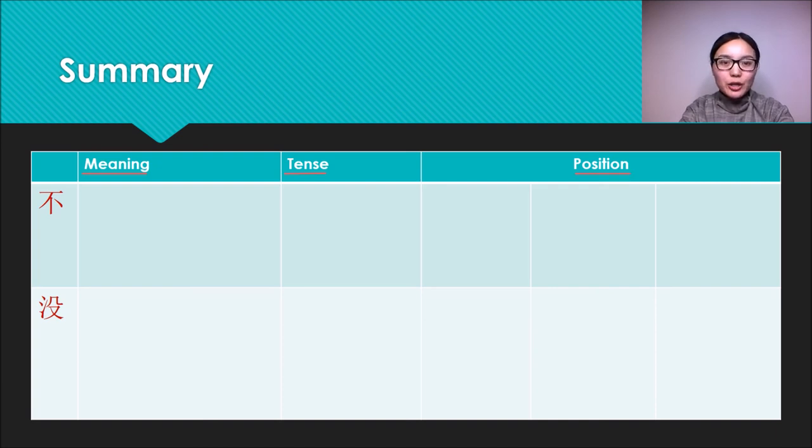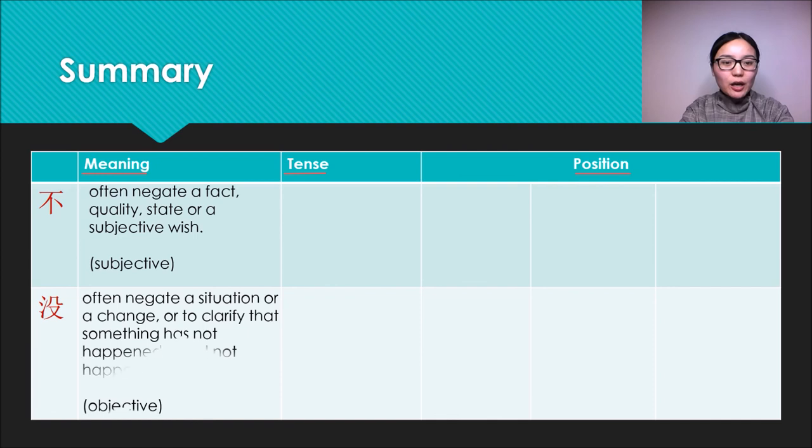In the first part, we should know that 不 often negates a fact, quality, state, or a subjective wish. It stresses subjective. However, 没 often negates a situation or a change, or to clarify that something hasn't happened or didn't happen. So it stresses objective.